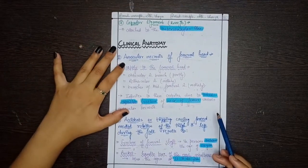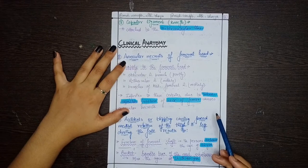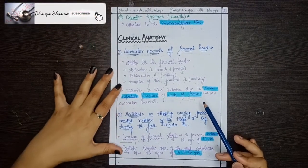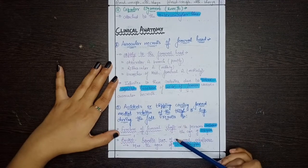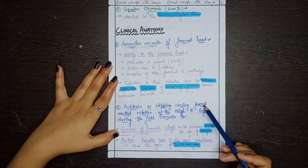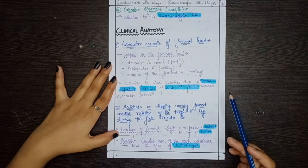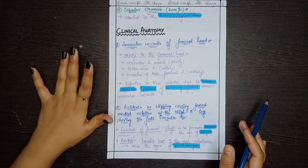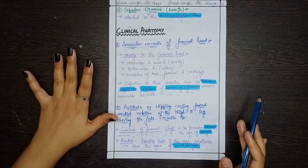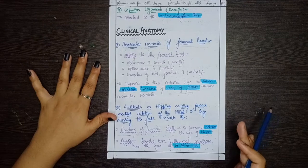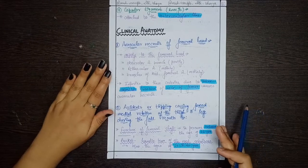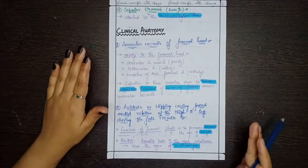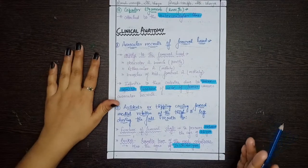In summary: reduced blood supply causes avascular necrosis of the femoral head, supplied by the retinacular and medial femoral circumflex arteries. The second condition involves fracture of the femoral shaft and tear of the medial meniscus due to forced medial rotation causing large force on bony surfaces. This was the last part of the femur bone anatomy series; next we move to hip joint anatomy. If you have any doubts, comment below, give a thumbs up, share, and subscribe.